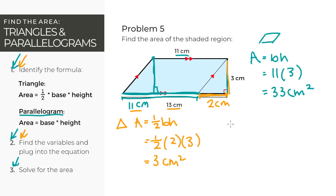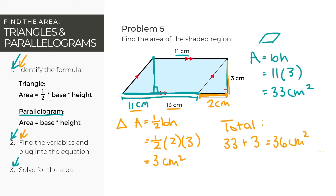We're not done yet because we just found the areas individually. We now need to add them up to find the area of the entire shape. So 33 plus 3 is 36 centimeters squared — that is our answer. The total area of this shape is 36 centimeters squared.